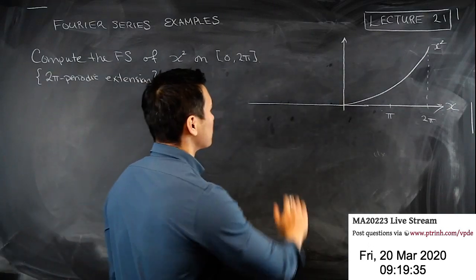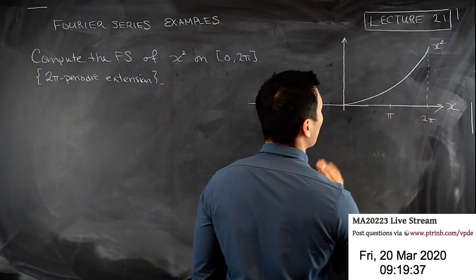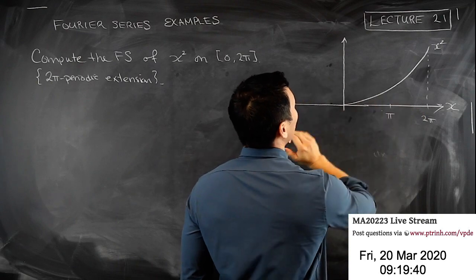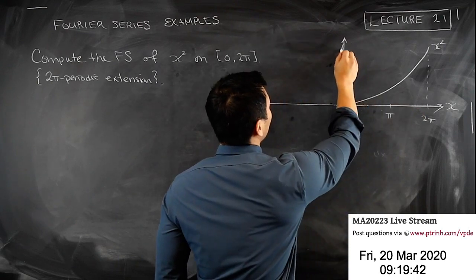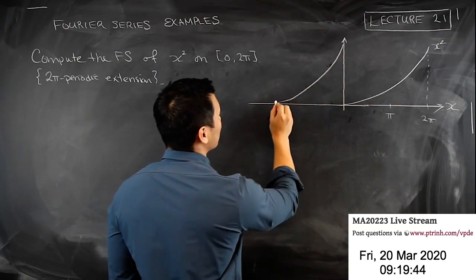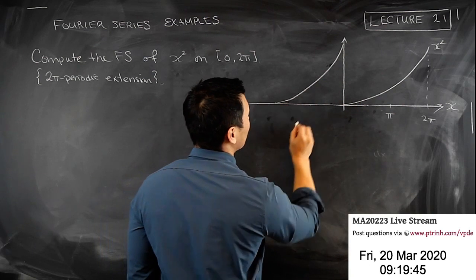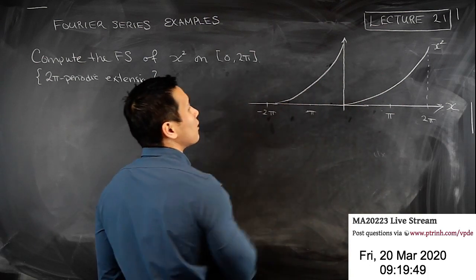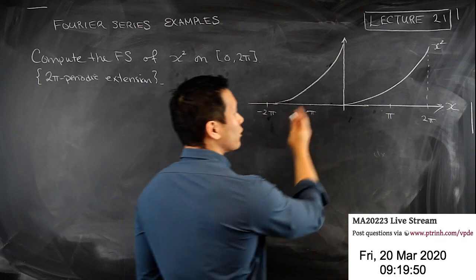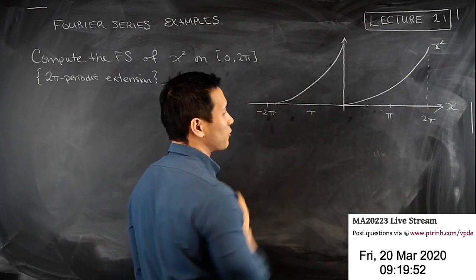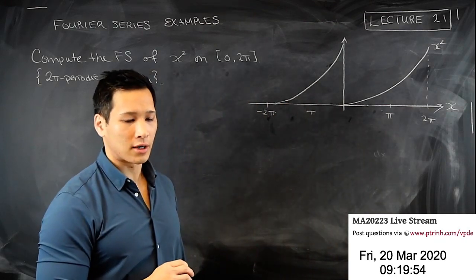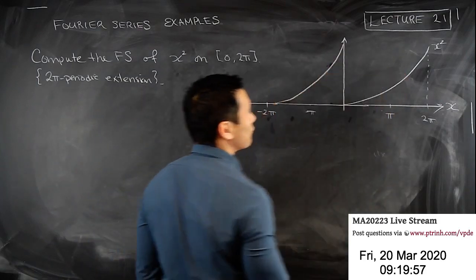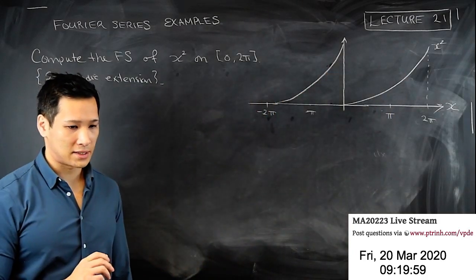So it's the 0 to 2π function, and then you take that function and you simply copy and paste it, and you'd have something like this. This is now minus π to minus 2π. What you're expecting is that if you were to plot the Fourier series, once you've computed it, it would lie on top of this extension. That's the basic idea.